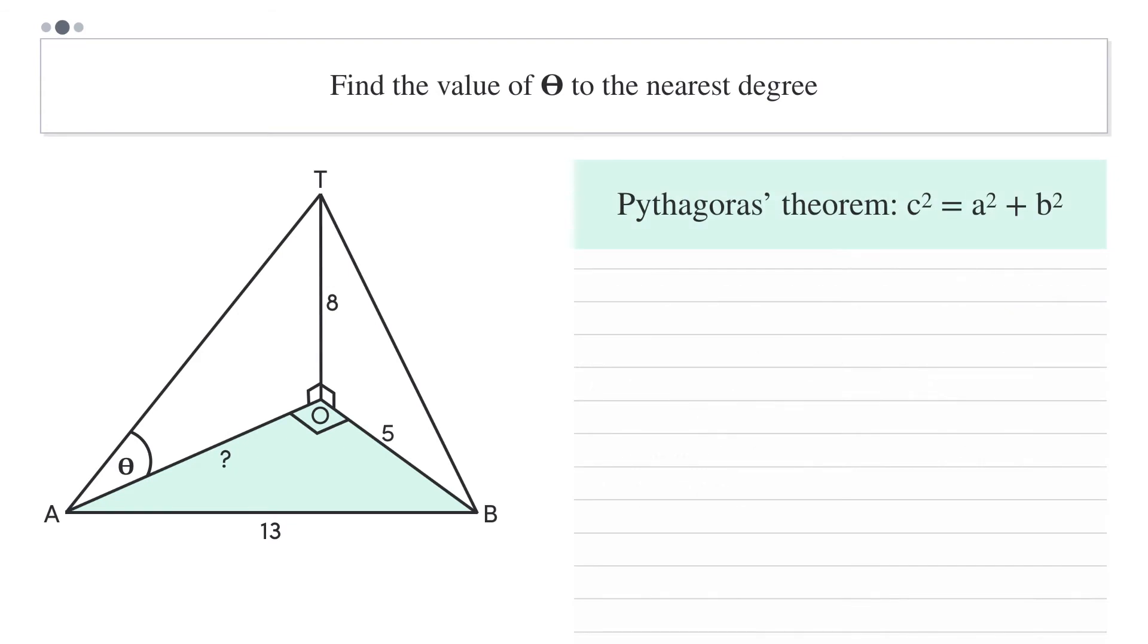Pythagoras' theorem says that in a right angled triangle, the square of the hypotenuse, C, is equal to the sum of the squares of the other sides, A and B. In triangle AOB, AB is the hypotenuse. So we can say that 13 squared equals 5 squared plus AO squared.